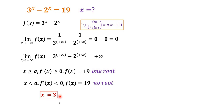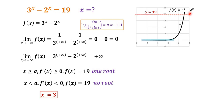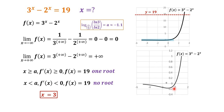Therefore, x is equal to 3 is the only root of the original equation. Here is the graph of f(x) — 3 to the power of x minus 2 to the power of x. The straight line at the level of 19 has one intersection with the graph of f(x), and there is one root at x equals 3. Zooming in, you can see f(x) decreasing in one range and increasing in the other, as we described.